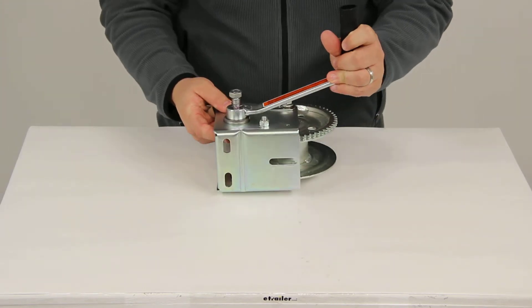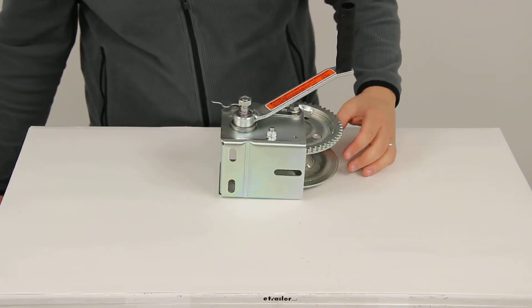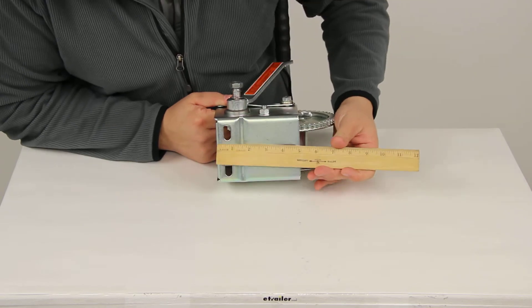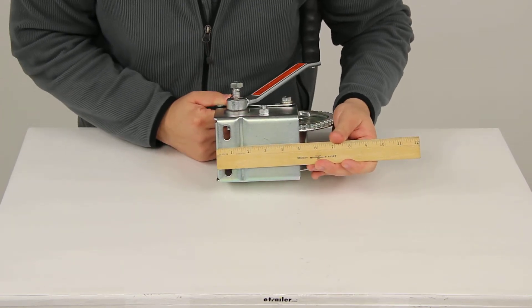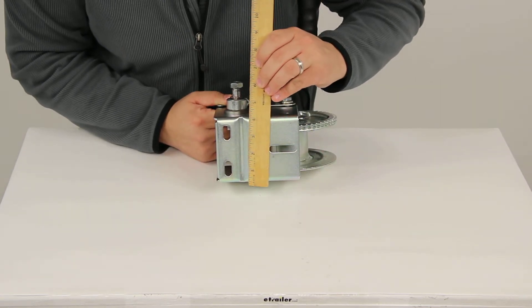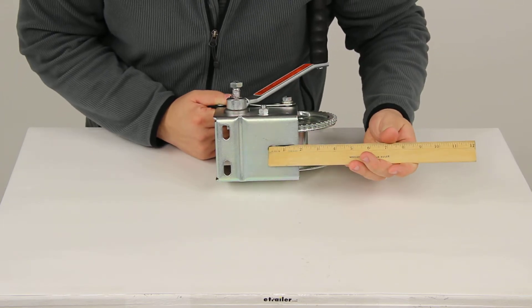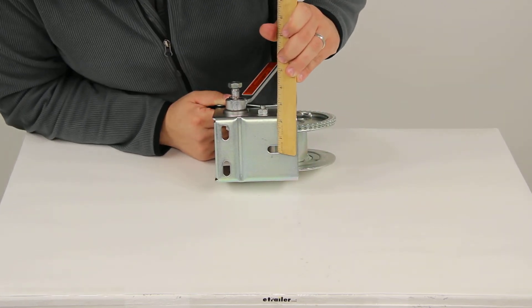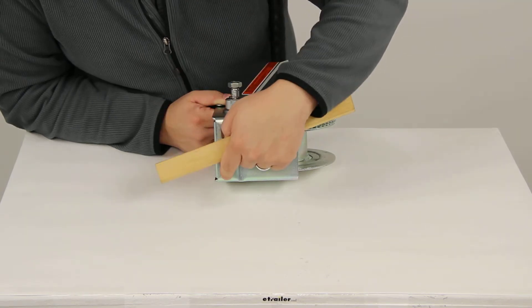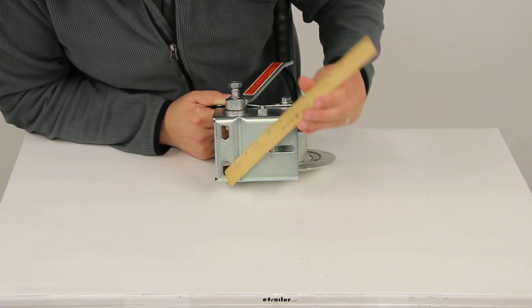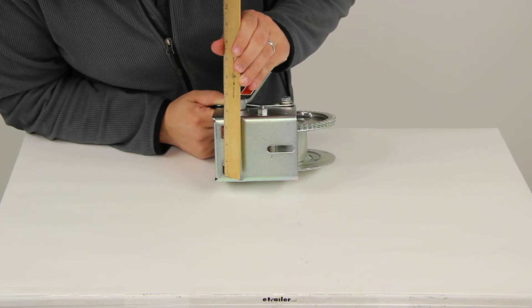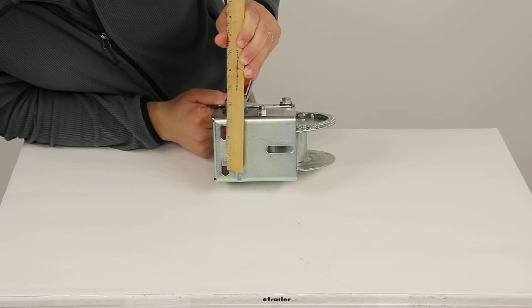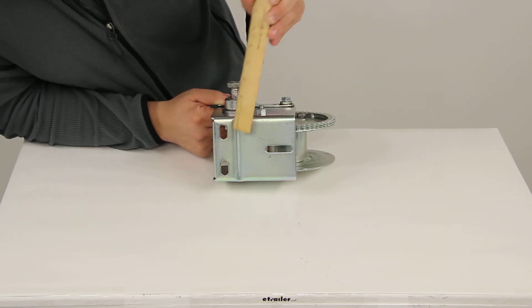Here on the underside we do have some pre-drilled bolt holes for an easy bolt on installation. Our mounting plate is going to give us a measurement of 5 inches by 4 inches. The elongated hole is going to measure an inch and a half by 3/8ths of an inch. These two holes are identical. They're going to measure 3/8ths of an inch by 7/8ths of an inch and from the center of one to the center of the other we have a measurement of 2 and 1 quarter of an inch.